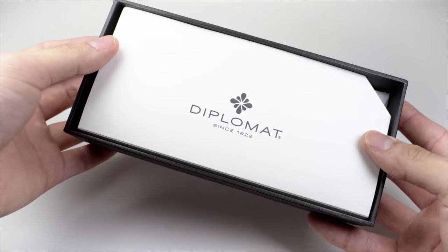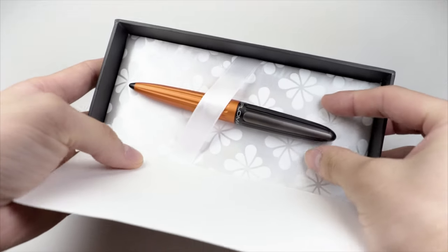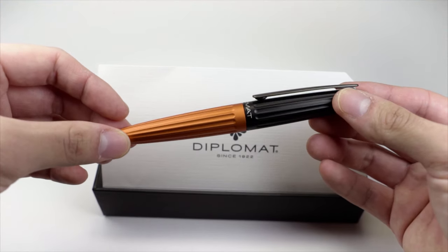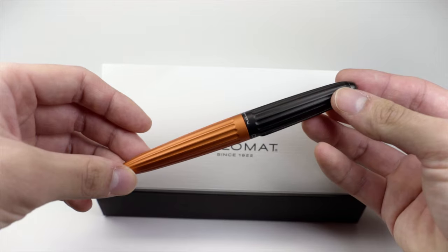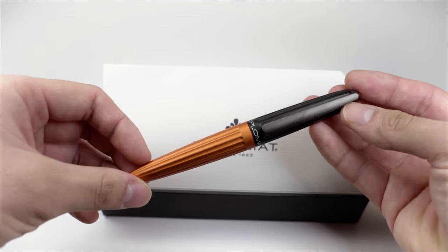Moving the paper flap aside reveals the pen. I got the orange and black model. This pen comes in different colourways including brown, red and blue as well as many more. They do also occasionally make a few limited editions. I'll leave a link in the description to the Diplomat website for the full range.